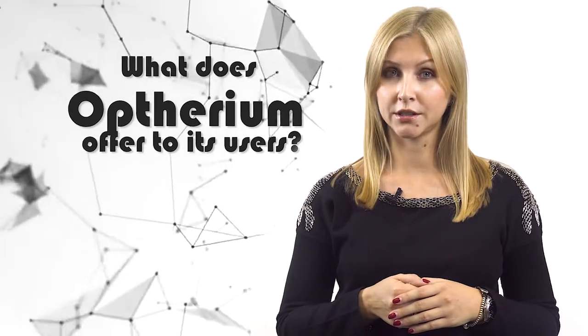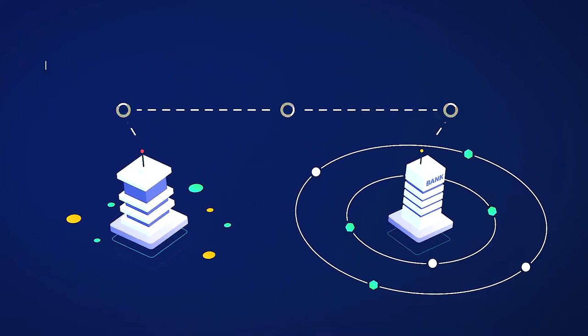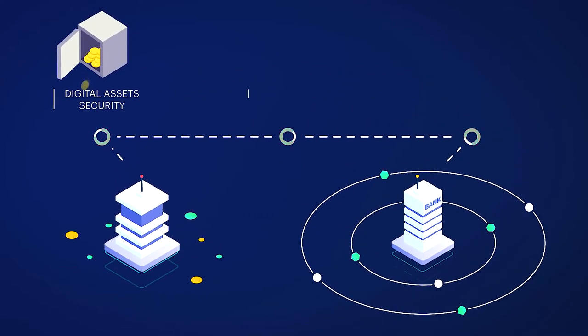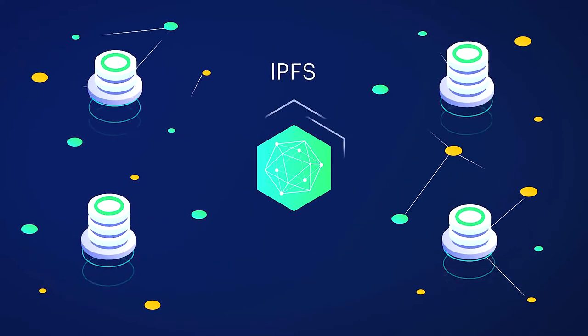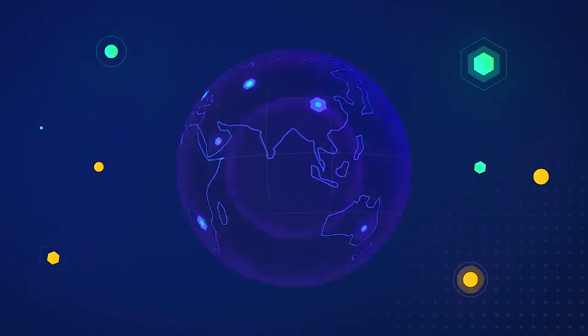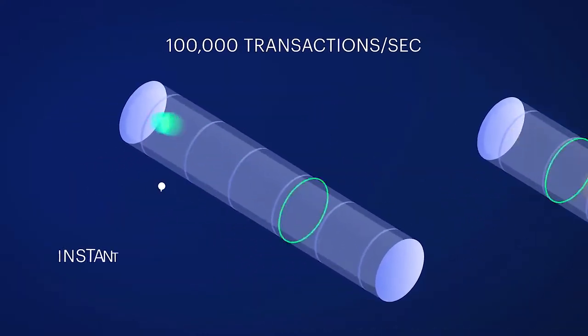What does Opterium offer to its users? Opterium's system combines a network of interconnected private blockchains based on Hyperledger fabric with Ethereum's smart contracts and the IPFS decentralized storage system. According to Opterium Labs, its system would be able to support 100,000 transactions per second.